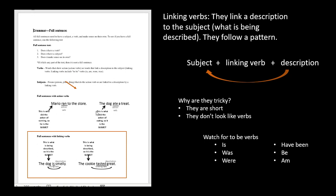You're not going to have to tell me whether you have an action verb or a linking verb, but you need to be able to pick out sneaky linking verbs. Linking verbs are verbs that link the description to the subject, and they follow a certain pattern: subject plus linking verb plus description. If the description points back at the subject, then you know for sure you have a linking verb. The reason they're tricky is these verbs tend to be short and don't look like verbs.